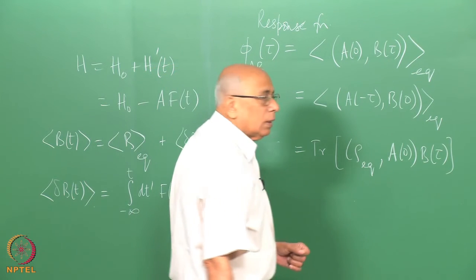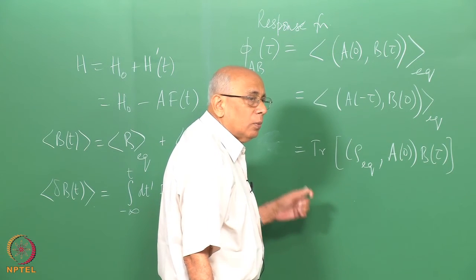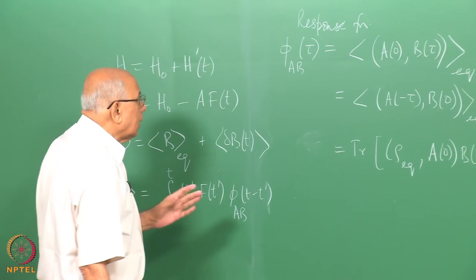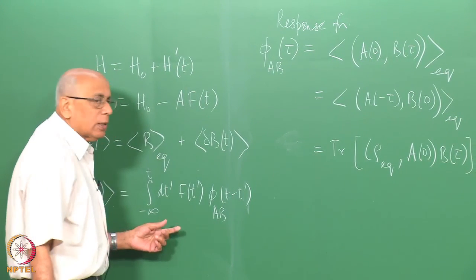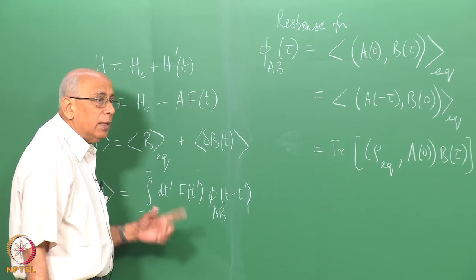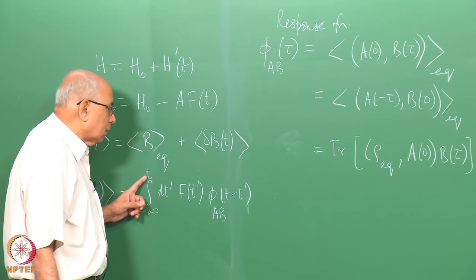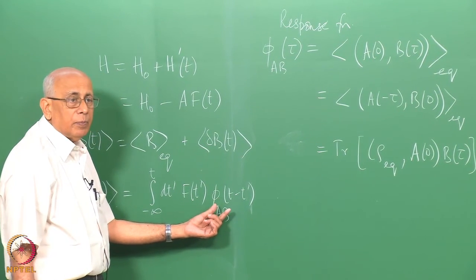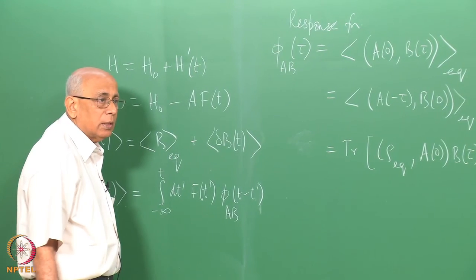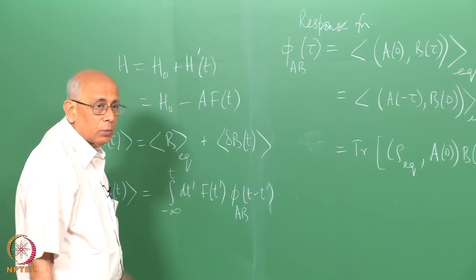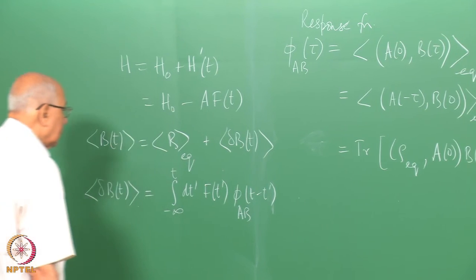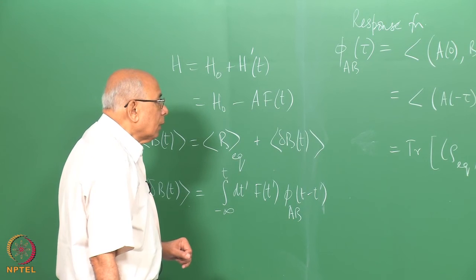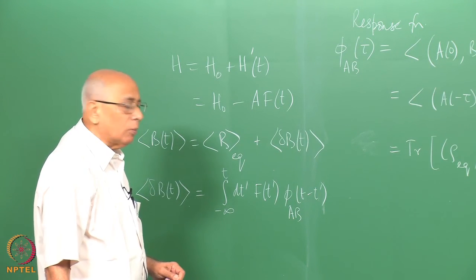What does this formula imply? The response is causal, linear, and first order in the force. It is causal and retarded because the time argument depends on the elapsed time since the force acted at time t′. Given this closed formal expression, we can now proceed to analyze it in more depth.